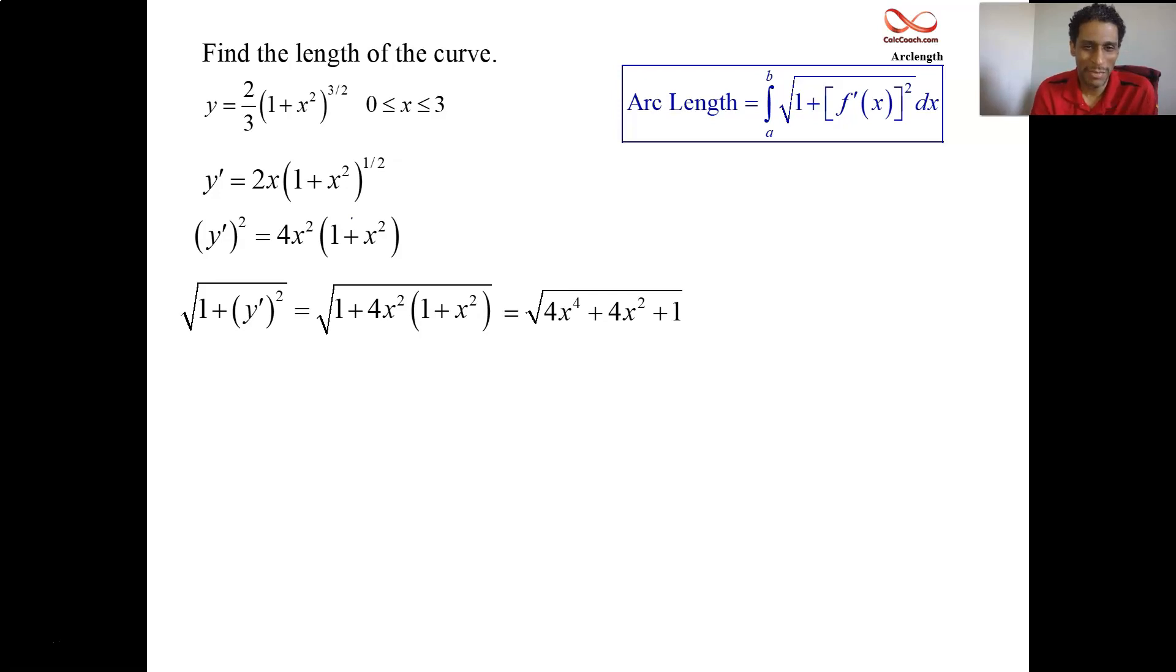It's a perfect square underneath a radical. That's great. And so now those two parts cancel out. You're just integrating 2x squared plus 1. You're doing it from x equals 0 to 3. I'll let you finish that out. The answer should be 21.